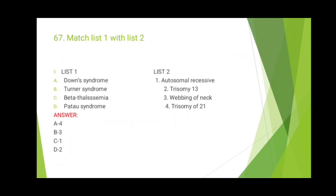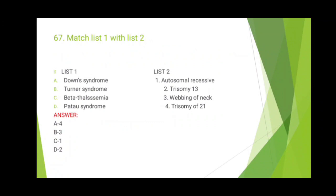The 68th question: according to Sushruta Samhita, the disease Vrishnakachu is dominated by which dosha? Vrishnakachu is a Shudra roga — Shudra roga is very important and you will get at least one question on it every year. The answer is Shleshmarekta.